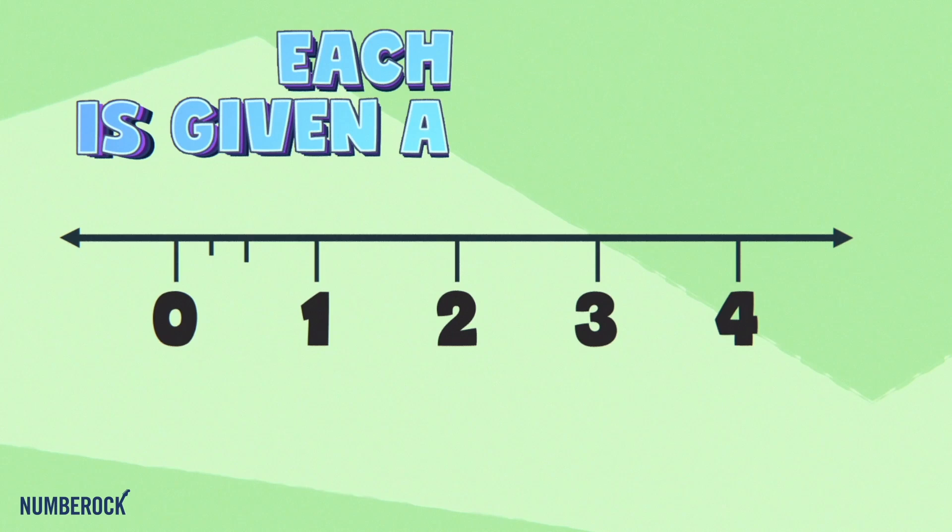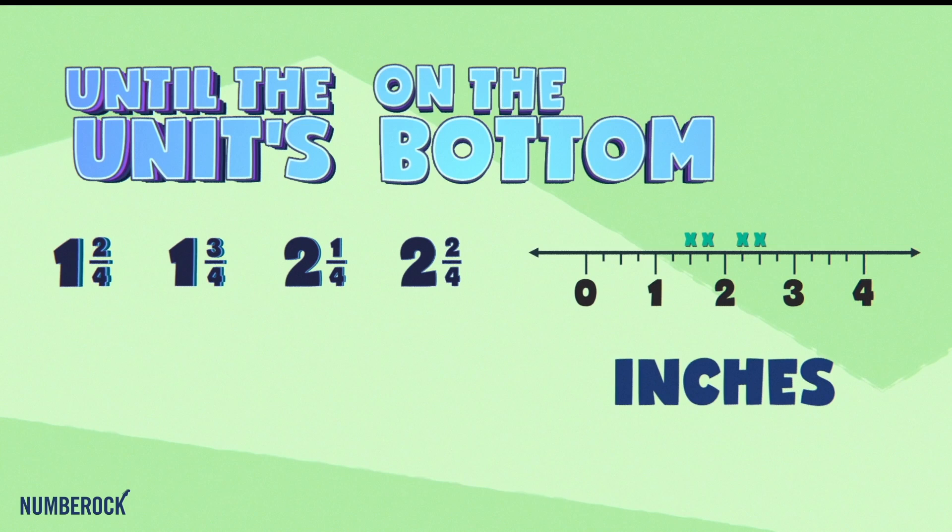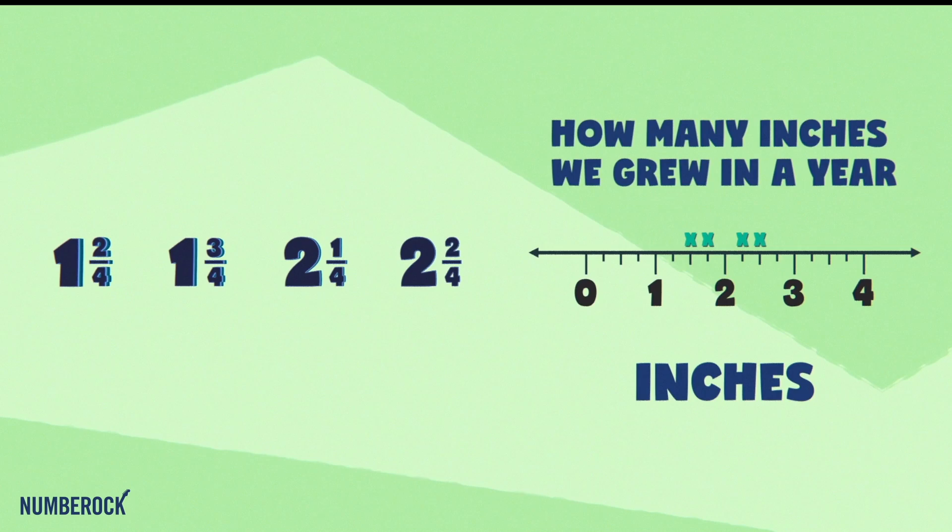From zero to four inches, we'll draw the line plot. Our interval's a quarter inches, each has given a spot. We'll block each data point and we won't stop until the unit's on the bottom and the title's on the top.